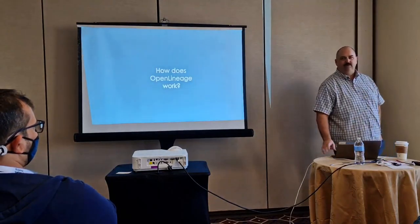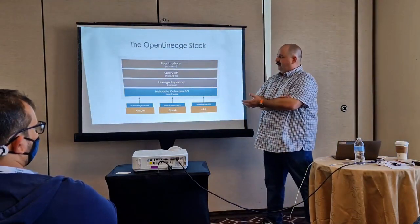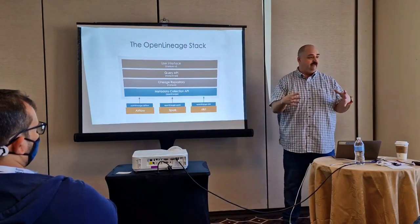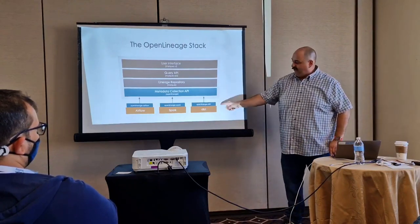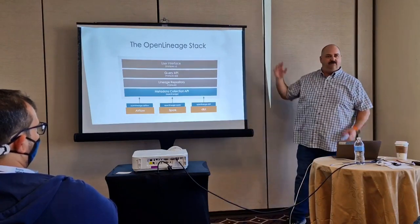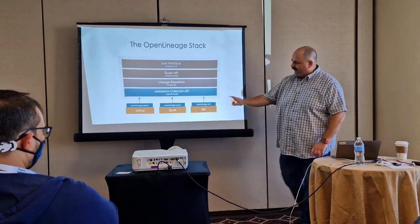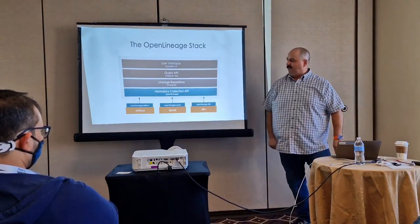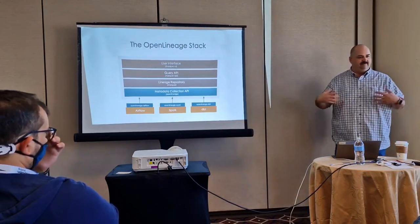So how does Open Lineage work? Here's the stack. Marquez is the concrete metadata server that exists along with the user interface. Open Lineage is the spec, the standard, and all the things that collect lineage. Open Lineage is the bottom half; Marquez is the top half architecturally. On the bottom we have all the tools that generate lineage metadata and their integrations — Open Lineage with Airflow, Spark, and DBT. They emit Open Lineage run state updates that conform to the standard, and Marquez catches those updates and renders them to the user.